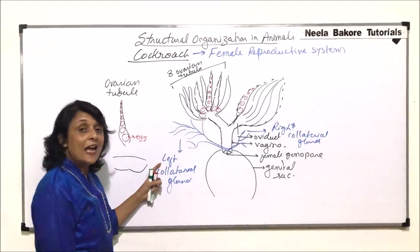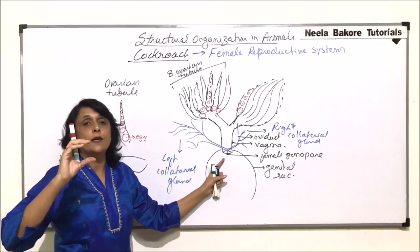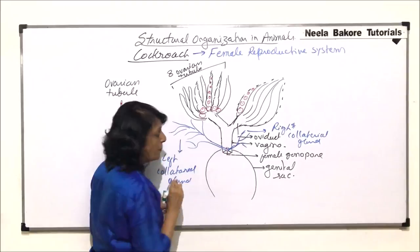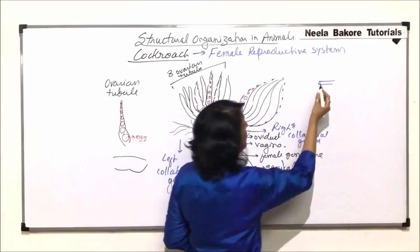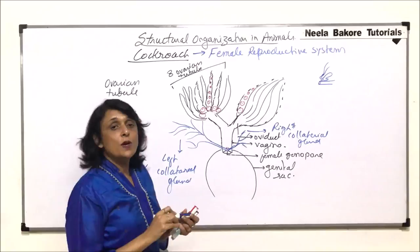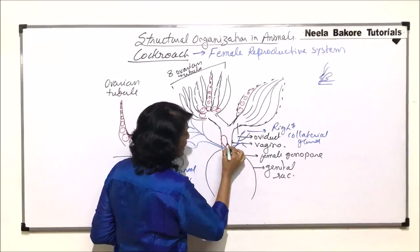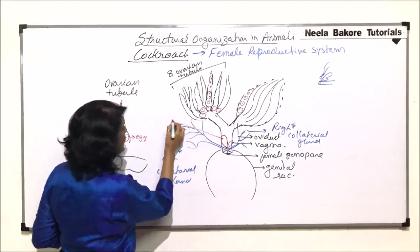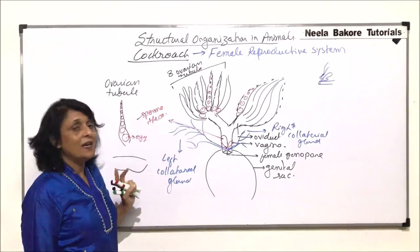The left one is bigger and has more branches, while the right one is less branched. One more structure is there in the form of a sack or pouch-like structure on top of it. We are showing the vagina, the female genital pore, and the opening of the collateral gland, with sack-like structures. One sack is bigger and the other sack is smaller. These sack-like structures are known as spermatheca, in which the sperms are stored.